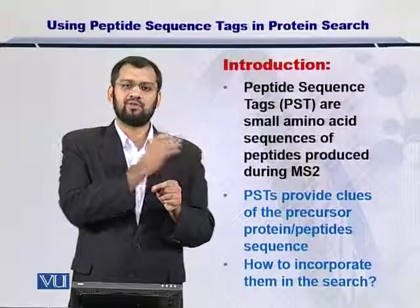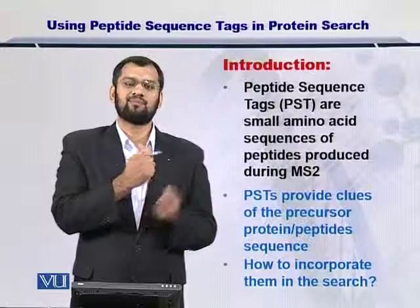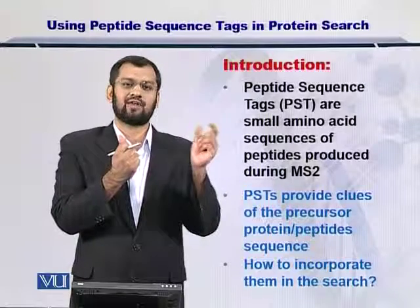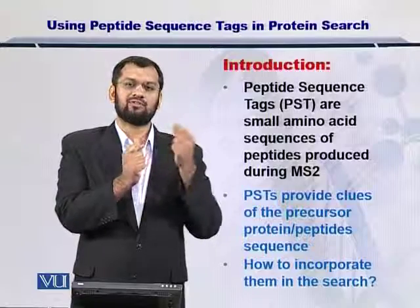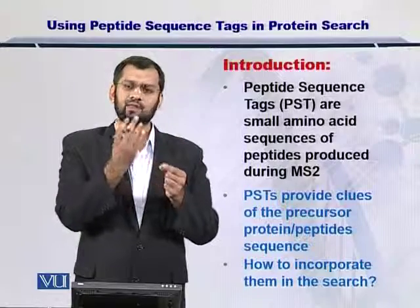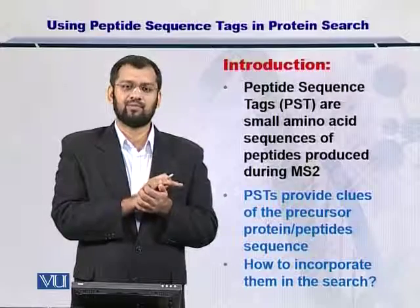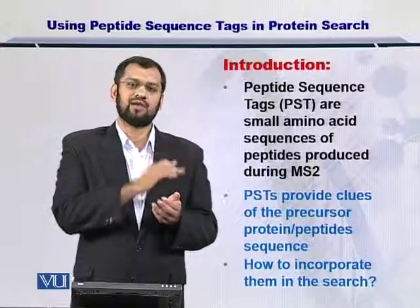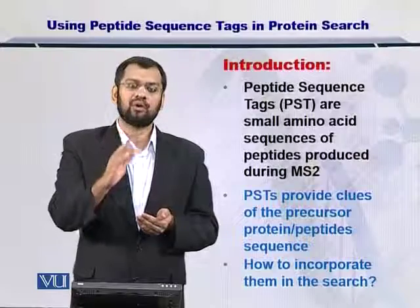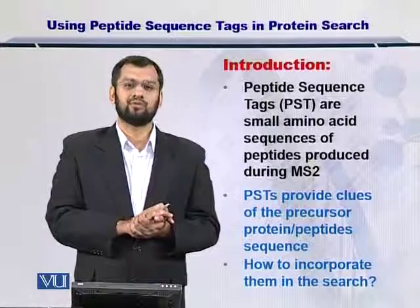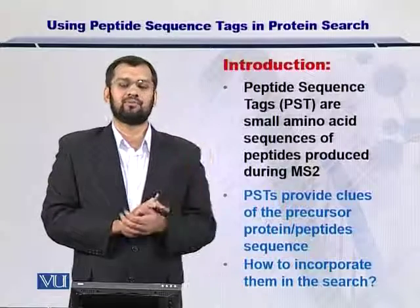You store that protein and go back to the database. You take the next protein, repeat the same process, and scan the peptide sequence tag from the sequence of that protein. If it also reports the peptide sequence tag, you add it to the candidate protein list as well. You continue processing the entire protein sequence database to search for these clues.